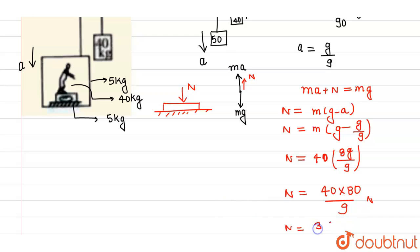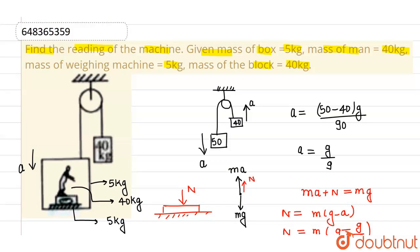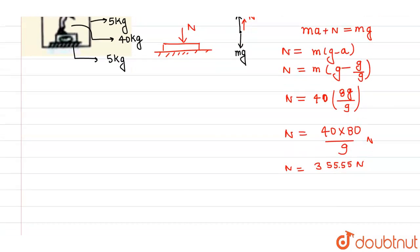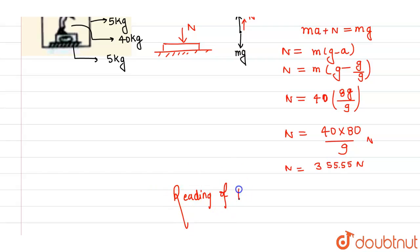Since we need to find the reading of the machine in kg, the normal reaction of 355.55 Newtons converts to a reading of approximately 35.5 kg-weight. This is the reading of the weighing machine that we needed to find out.